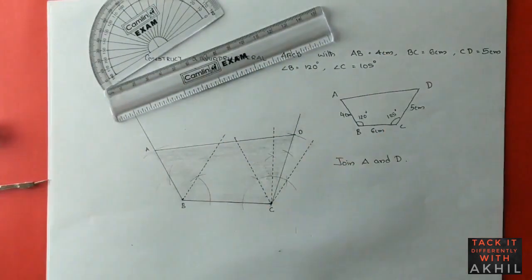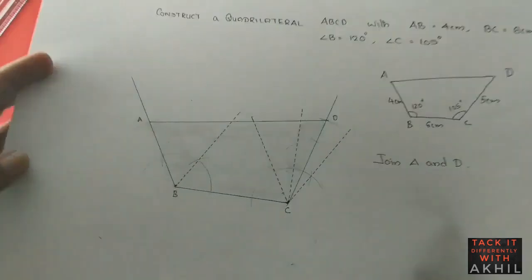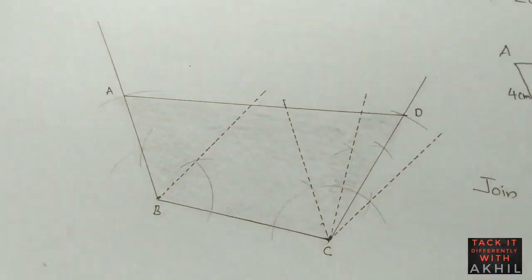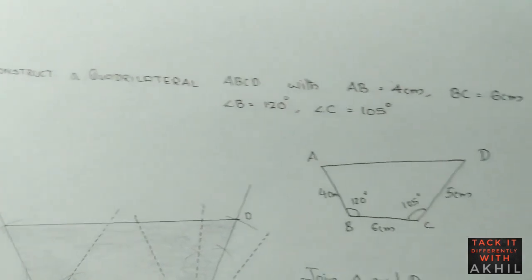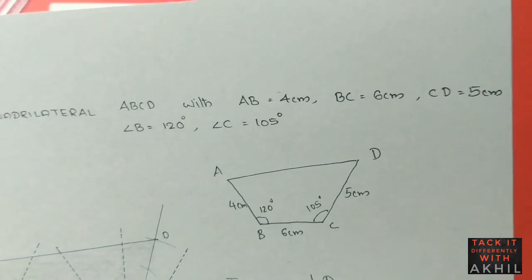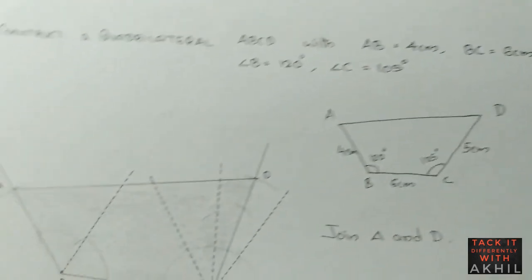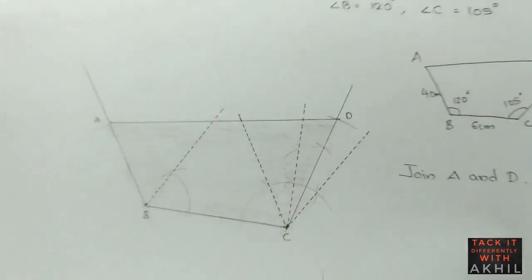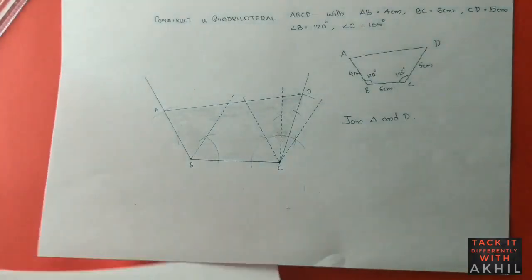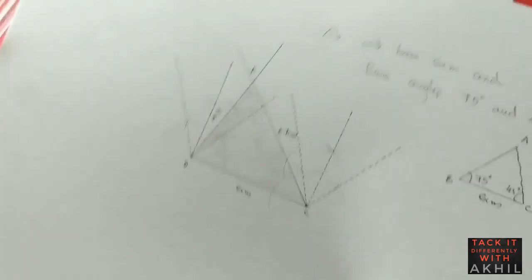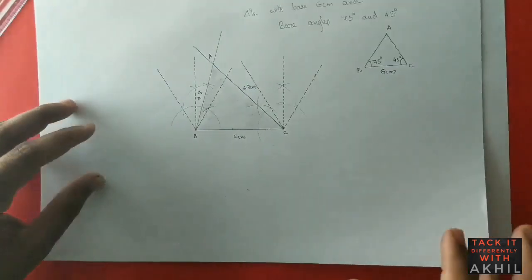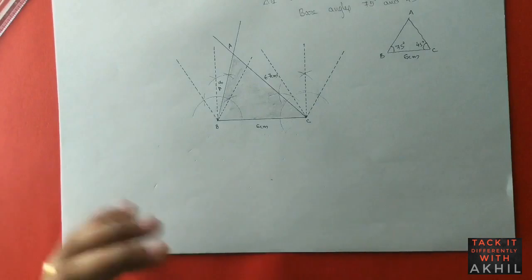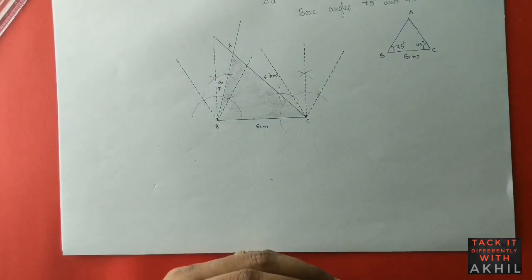Here is our final product — the quadrilateral ABCD with measurements 4 cm, 6 cm, 5 cm, angle B 120 degrees, and angle C 105 degrees. And this was the first one — the triangle. This method can be applied to construct any triangle or any polygon involving standard angles.